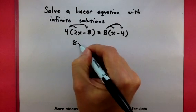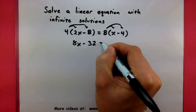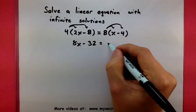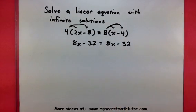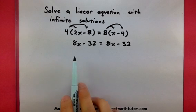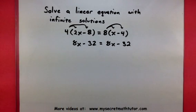This will give me 8x minus 32 equals 8x minus 32. Now already you can see we might have something a little fishy because we have the same thing on both sides of the equal sign. But let's go ahead and continue.